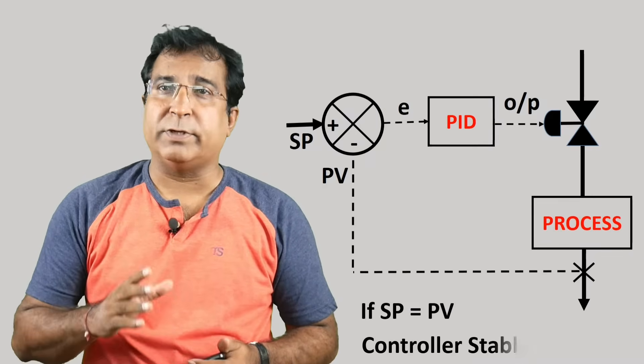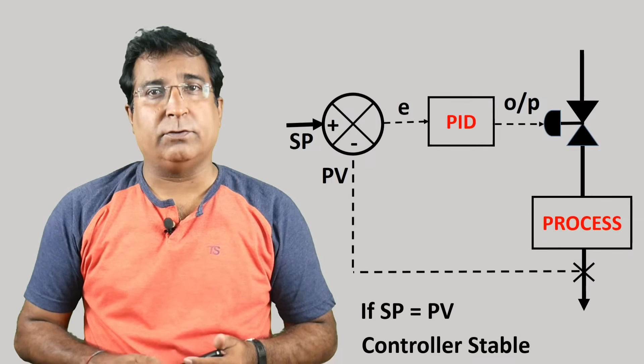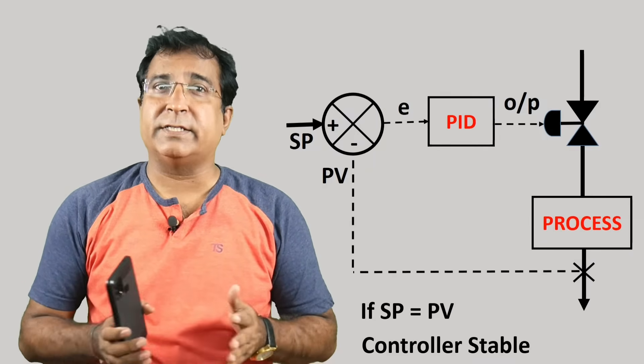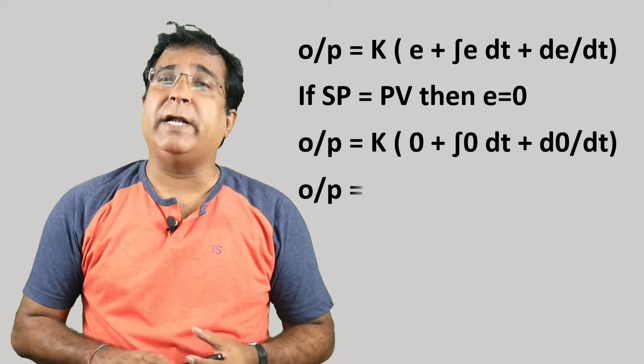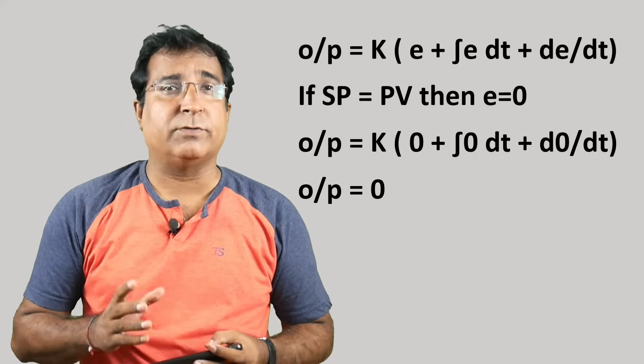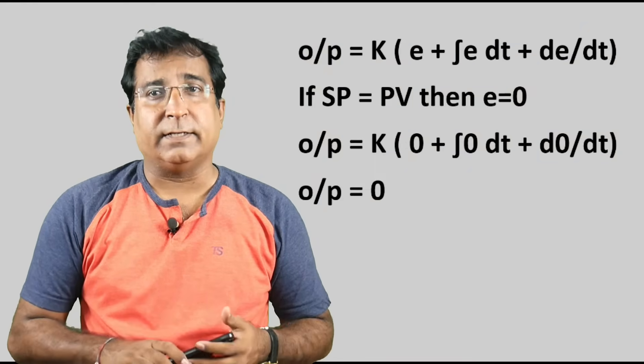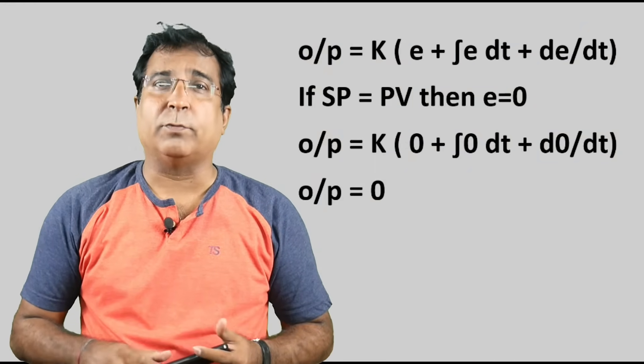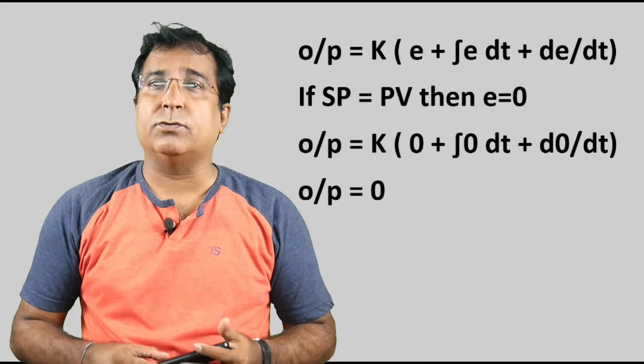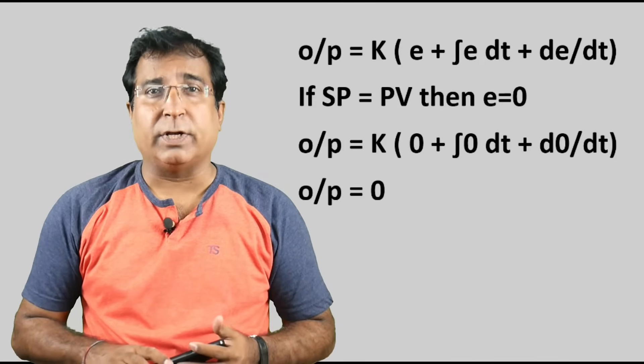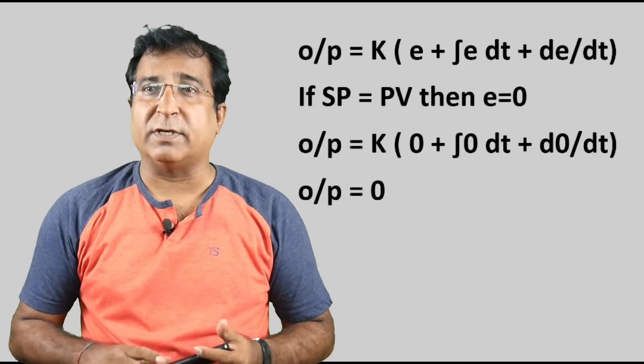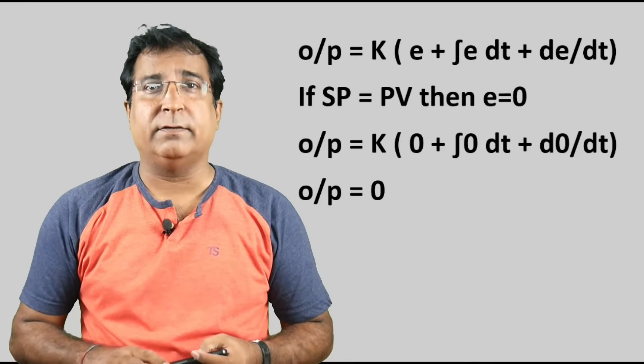You can see on the screen to understand this. A PID controller is said to be stable when process value becomes equal to setpoint. Now the essential thing to notice is that when process value becomes equal to setpoint, then according to PID controller equation the output should become zero. And if this is the case then control valve or VFD or my final control element will close to minimum. But you need controlling energy to run the process.